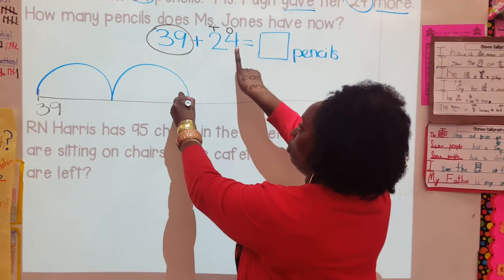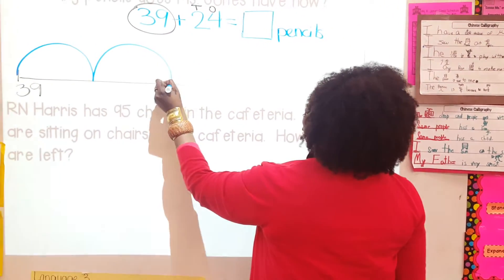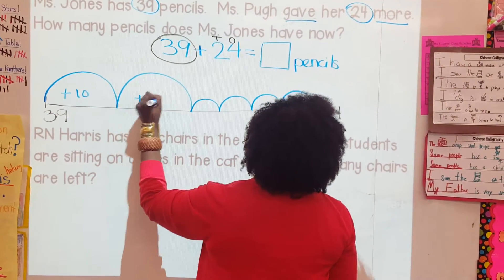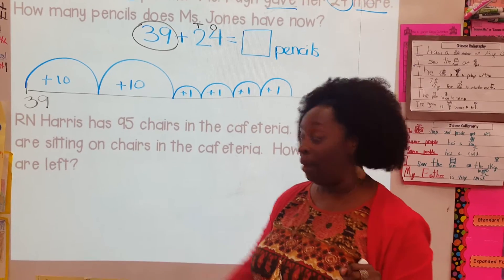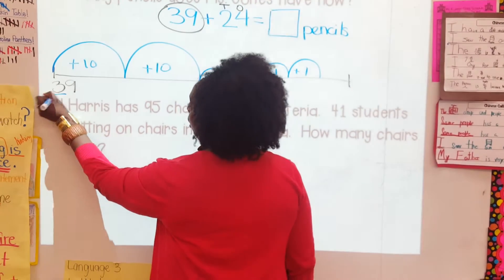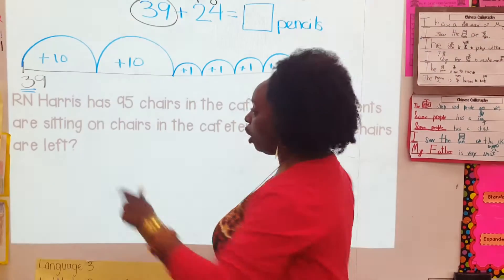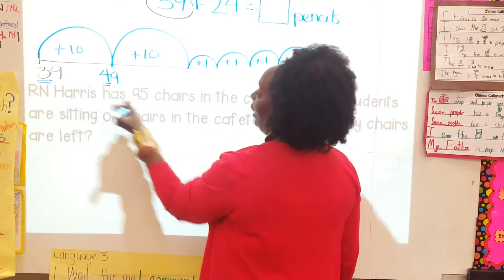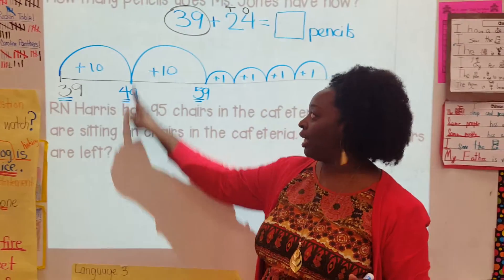We start at 39 and skip count by tens. 39 with 10 more — look at the tens place, we have a 3 in the tens place. What comes next? We're going from 30 to 40, so 39, 49. 10 more than that: 49, 59. Those are our big 10 jumps — 39, 49, 59. The ones place stayed the same but we did jump up in the tens place.